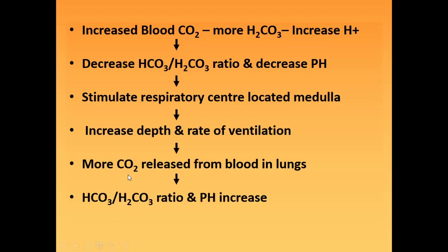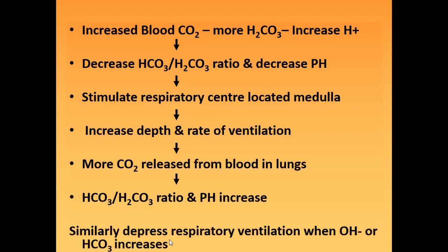More carbon dioxide is released from the blood in the lungs as the rate of ventilation increases. When carbon dioxide is released, H2CO3 will decrease and the HCO3 to H2CO3 ratio changes, leading to an increase in pH. Similarly, there is a decrease in respiratory ventilation when OH or HCO3 increases — that means when there is alkalosis, there is a decrease in ventilation. When there is acidosis, there is an increase in the rate of ventilation.